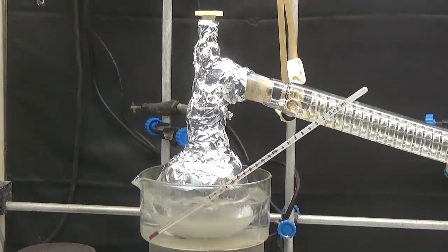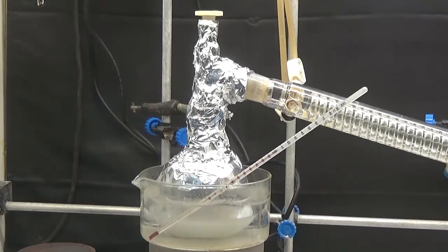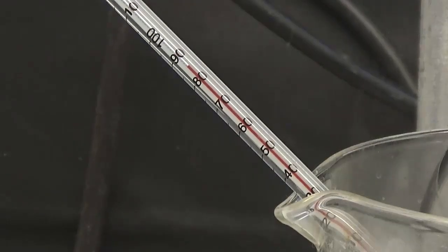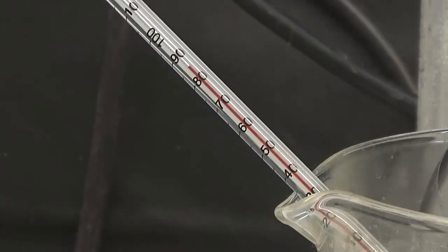After reflux we install vacuum distillation and heat with a 70 to 90 degrees Celsius water bath to remove most of the non-reacted water and hydrazine.